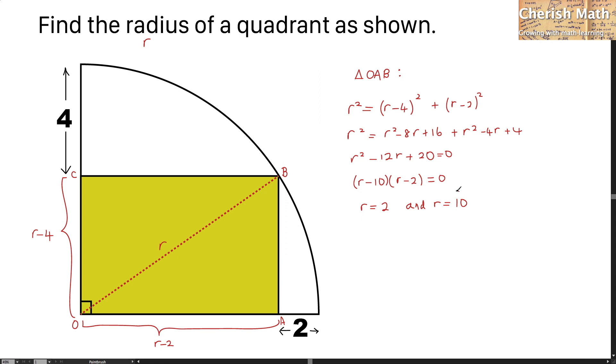The value can only be 10. The reason is because if r equals 2, the value here becomes 0, which is impossible. So r equals 10 is the acceptable answer.